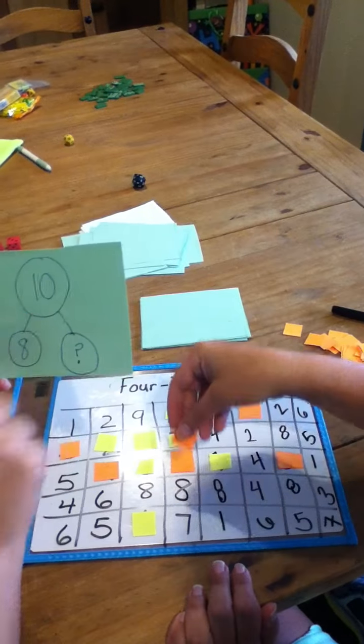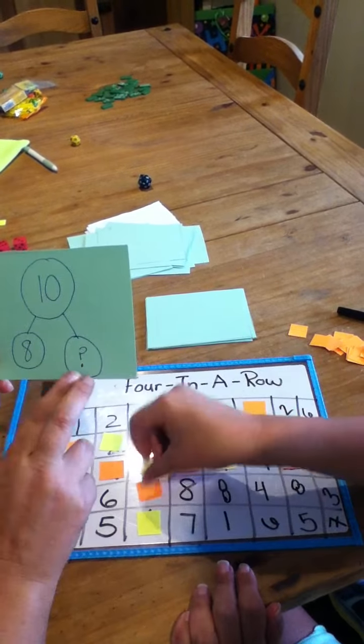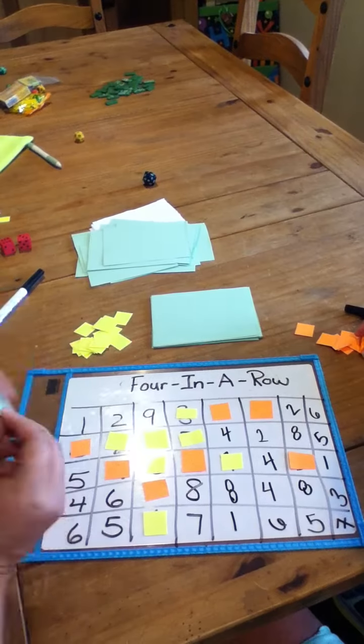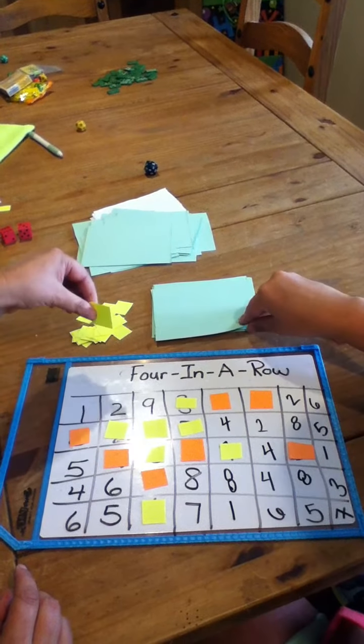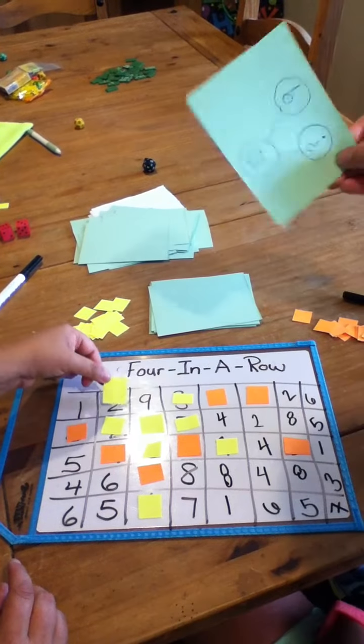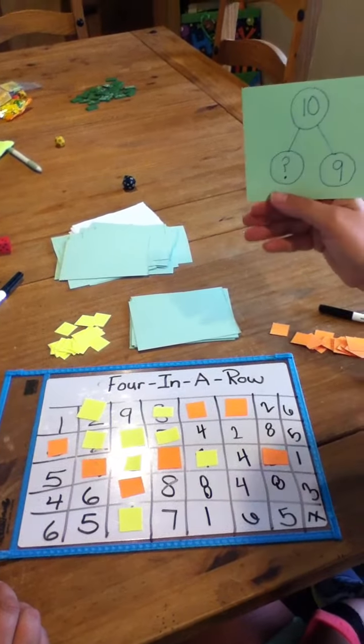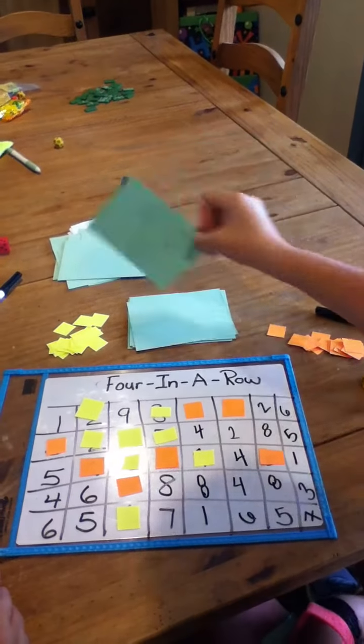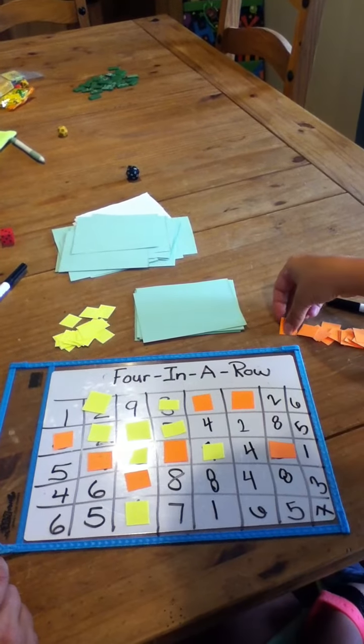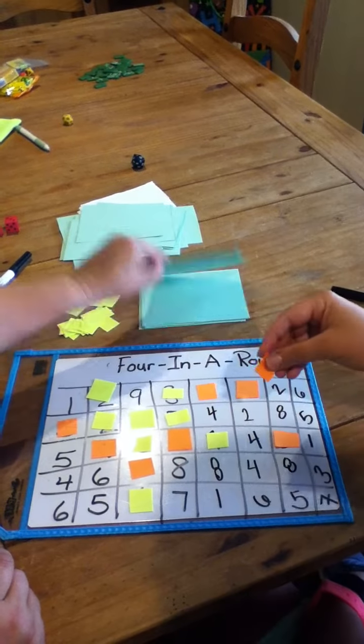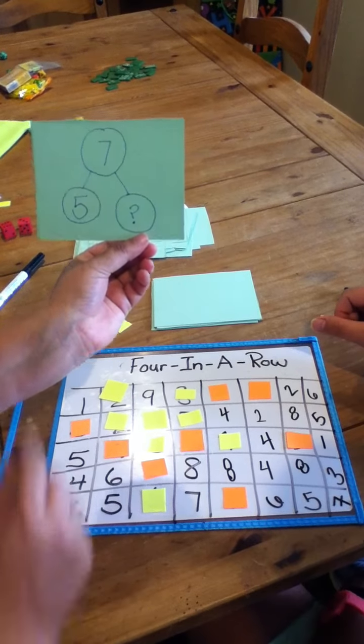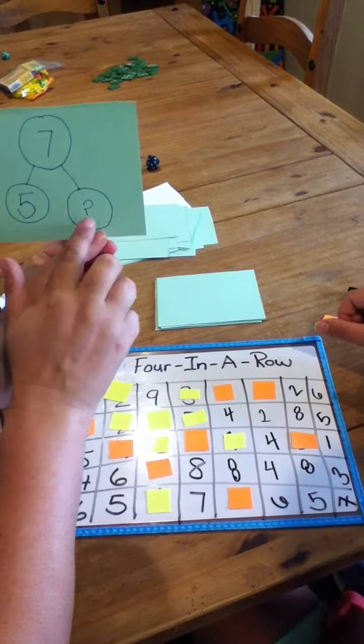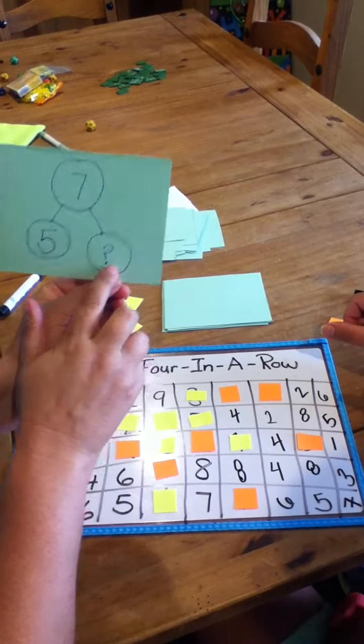All right. So my whole is ten, eight, and two more would make ten. Ten is my whole. One plus nine is ten. I know that five and one is six, so it has to be five and two. My missing part is two.